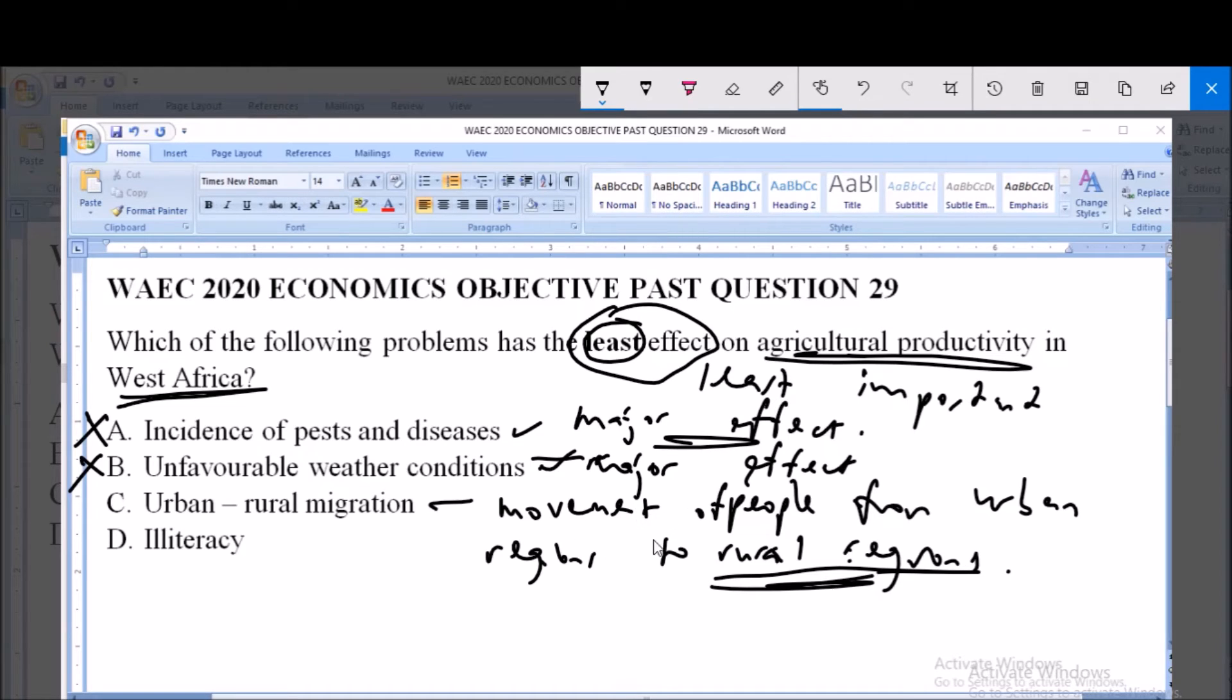The major effect or the major problem is when you have rural urban migration. So rural urban migration can be seen as a major problem. But urban rural migration is not seen as having a major effect. So it is having a minor effect.